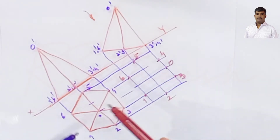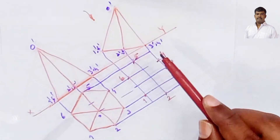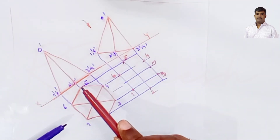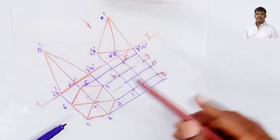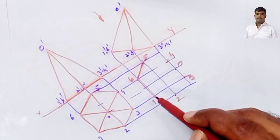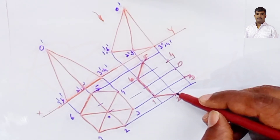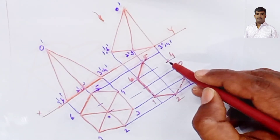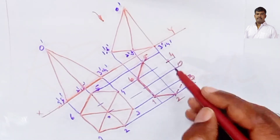In the top view, the base hexagon is 50% visible and 50% invisible. Visible edges: 5 to 6, 6 to 1, 1 to 2. Invisible edges: 2 to 3, 3 to 4, 4 to 5. So 5-to-6 visible, 6-to-1 visible, 1-to-2 visible; 2-to-3 invisible, 3-to-4 invisible, 4-to-5 invisible.